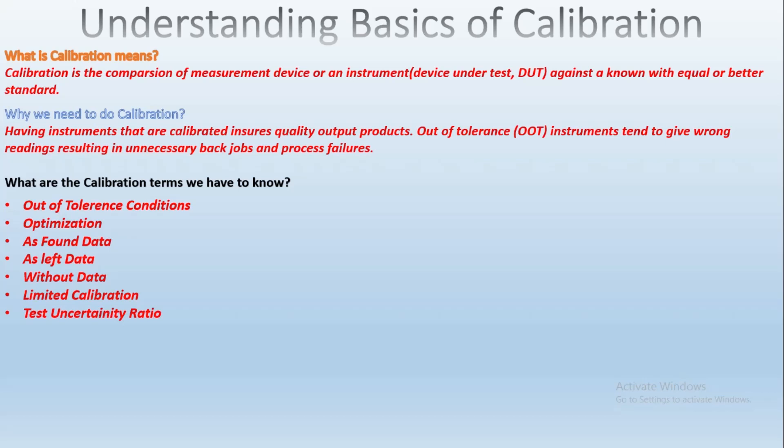The next term is TUR — Test Uncertainty Ratio. This is the ratio of the accuracy of the instrument under test compared to the accuracy of the reference standard.